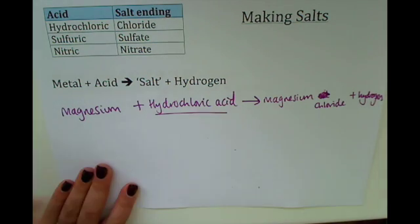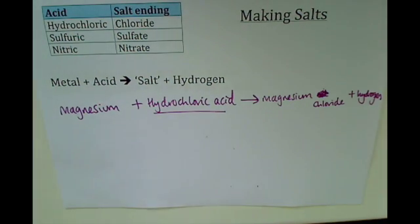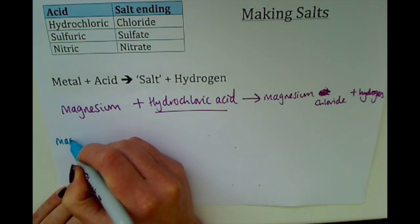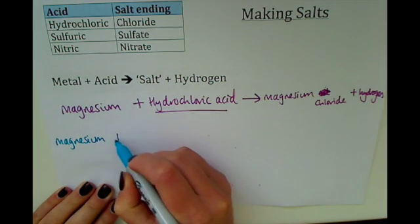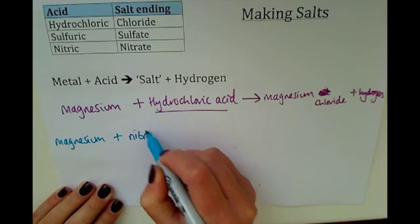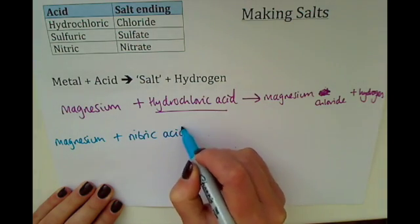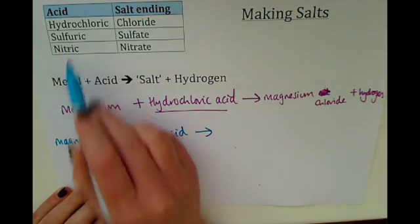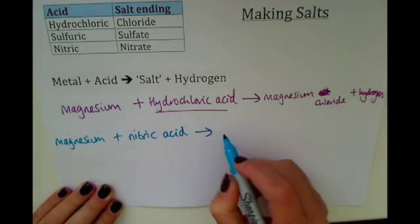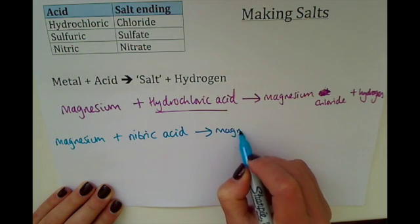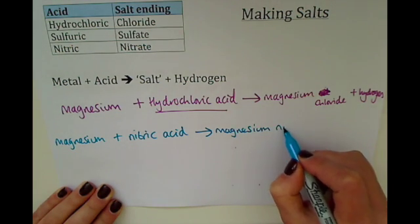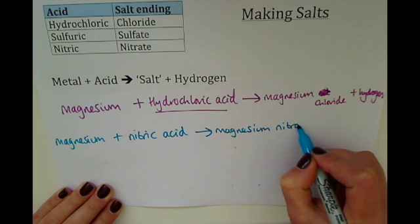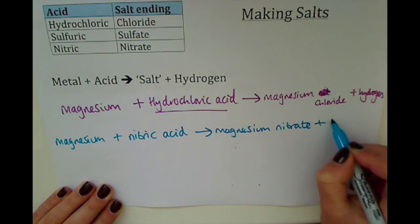If we were to change this acid and instead have magnesium plus nitric acid, we would follow these rules and make magnesium nitrate this time, plus hydrogen.